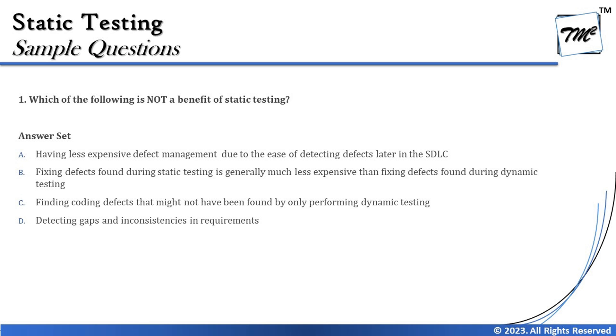Option A says: 'having less expensive defect management due to ease of detecting defects later in the SDLC.' This can sound tricky, but if you read every single word, it is true that static testing is less expensive - however, the word 'later' at the end is wrong. Static testing is conducted early in the life cycle, not later. Just one word changes the entire meaning. Later refers to dynamic testing. So option A seems to be the right answer, but let's cross-check the other options.